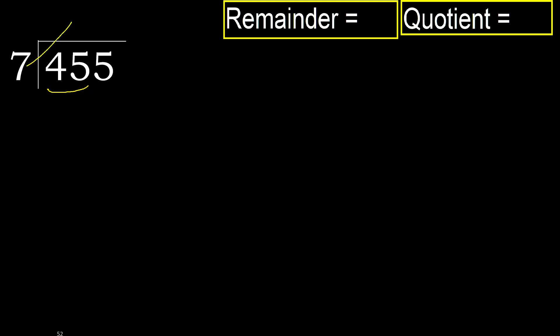7 multiplied by which number is nearest to 45 but not greater? 7 multiplied by 7 is 49, which is greater. 7 multiplied by 6 is 42, which is not greater. 45 minus 42 equals 3.